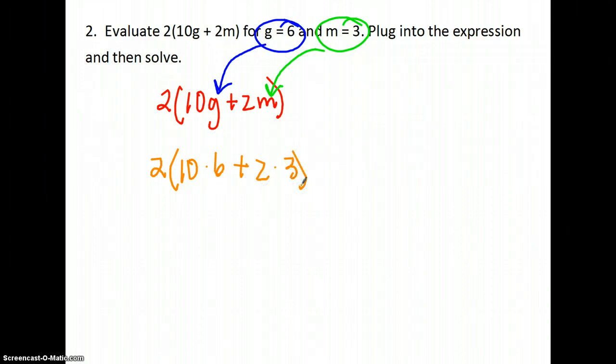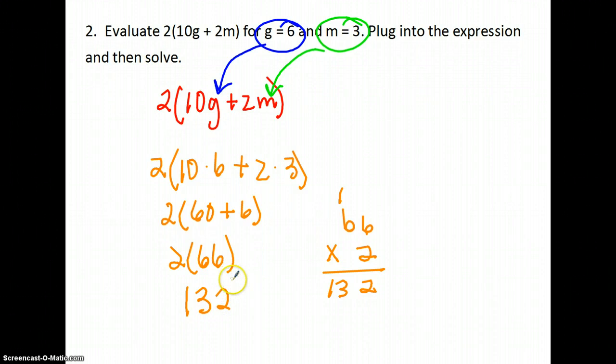Using my order of operations, I do what's in the parentheses first, and then I multiply first. So it's 2 times (60 + 6). 2 times 60 plus 6 is 2 times 66, which is 66 times 2: 12, carry my 1, 13. 132. That's my answer.